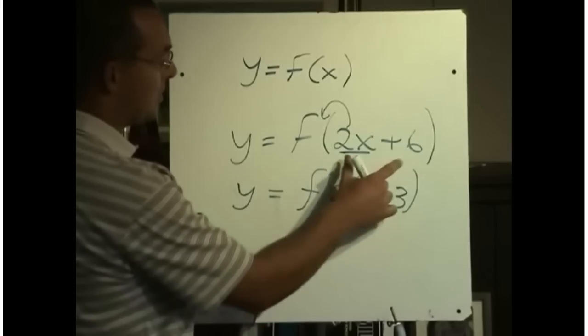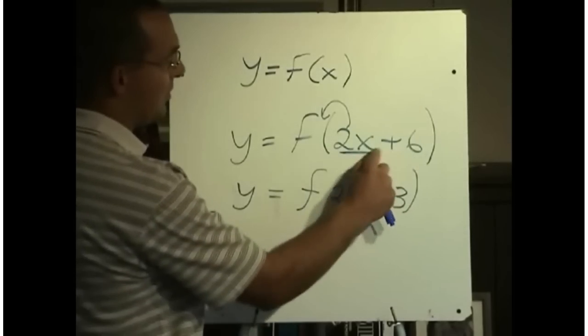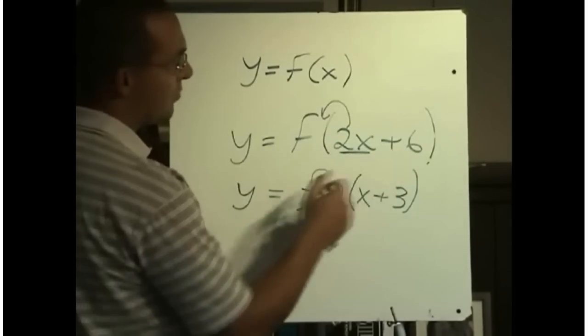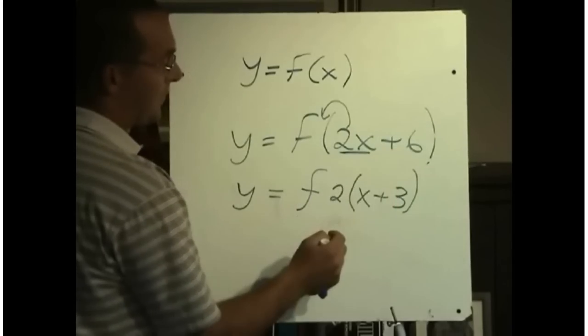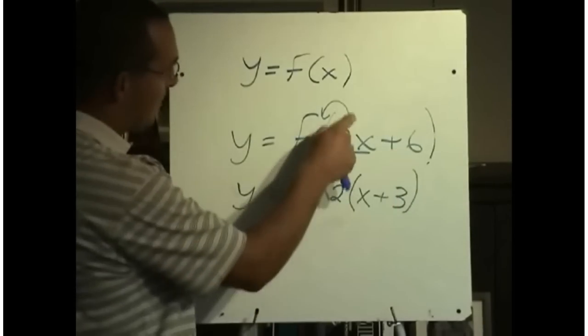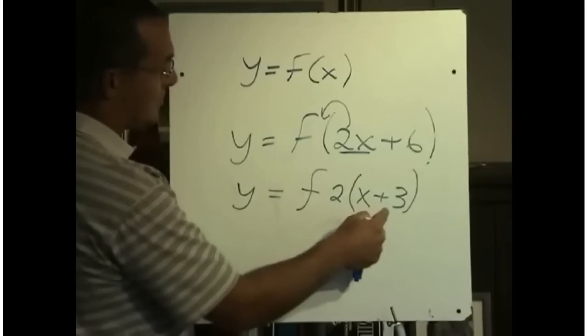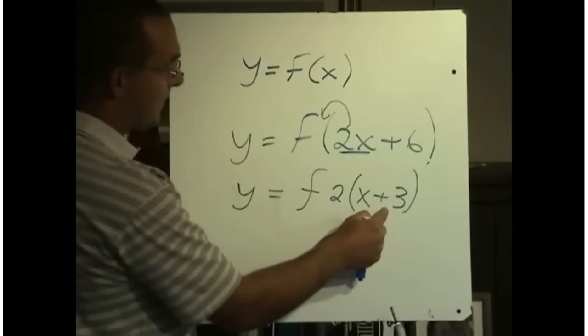I love this question on final exams. They'll ask you, they'll give you this function here, and they'll say which way is it moved. Is it left 6, right 6, or is it left 3 or right 3? Just remember to always factor the coefficient of x out, and then you'll see it's actually moved to the left 3.